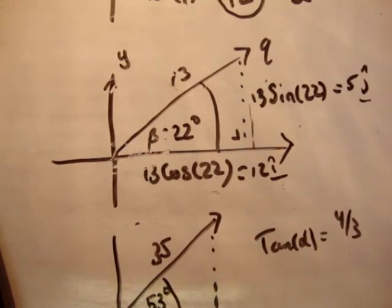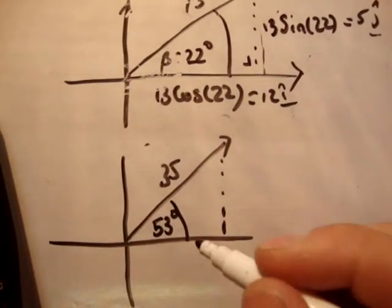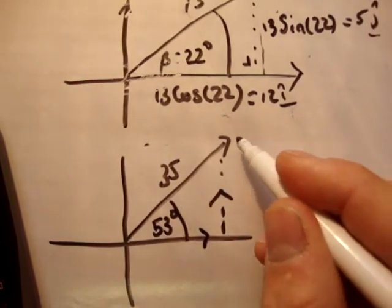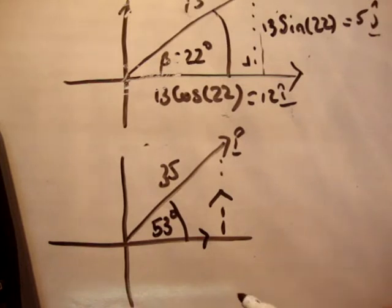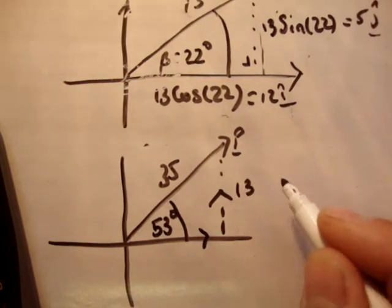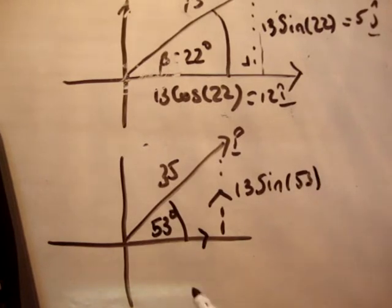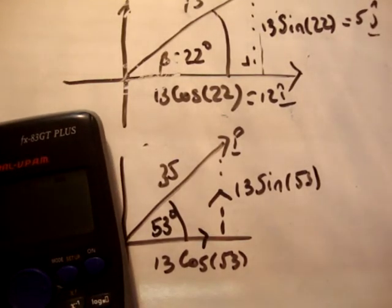So using SOHCAHTOA again, we're going to resolve this resultant vector into its component unit vectors. The two vectors are this one and this one, because if you add the two of them, you get this resultant here called P. From SOHCAHTOA, we know that this is 13 times the sine of 53. This is 13 times the cos of 53. Let's see if that's correct.